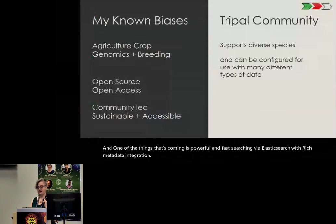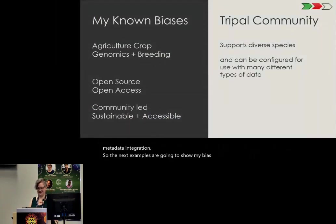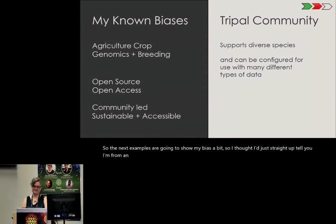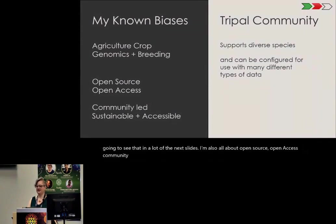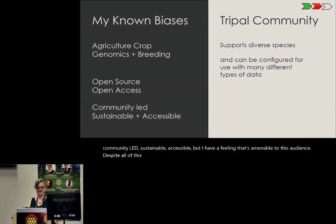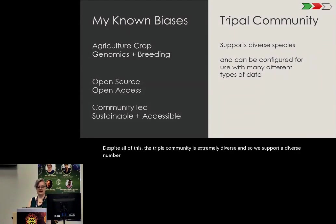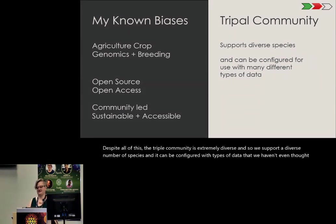The next examples are going to show my bias, so I'll just tell you upfront: I'm from an agricultural crop genomics and breeding background, and you're going to see that in a lot of the next slides. I'm also all about open source, open access, community-led, sustainable, and accessible — but I have a feeling that's amenable to this audience. Despite all of this, the TRIPLE community is extremely diverse, and we support a diverse number of species. It can be configured with types of data we haven't even thought of, just based on how it's designed.